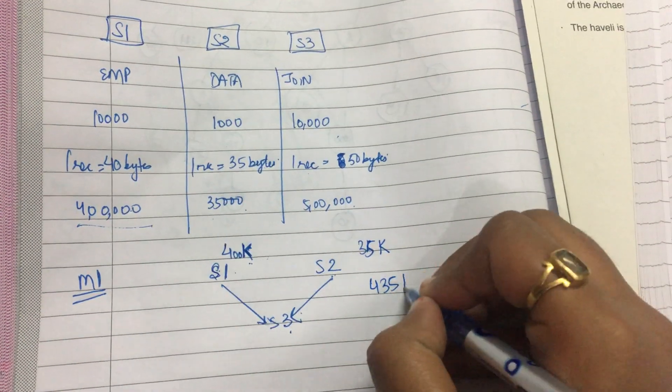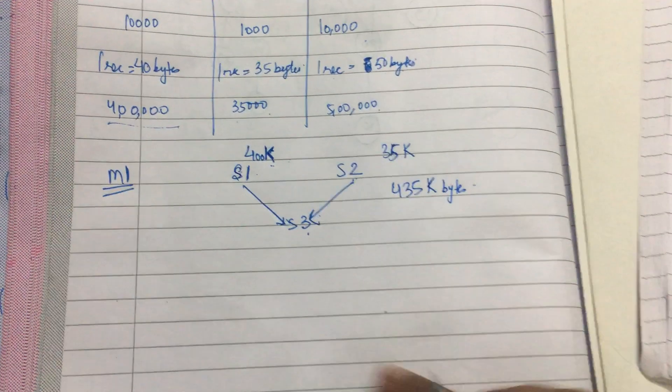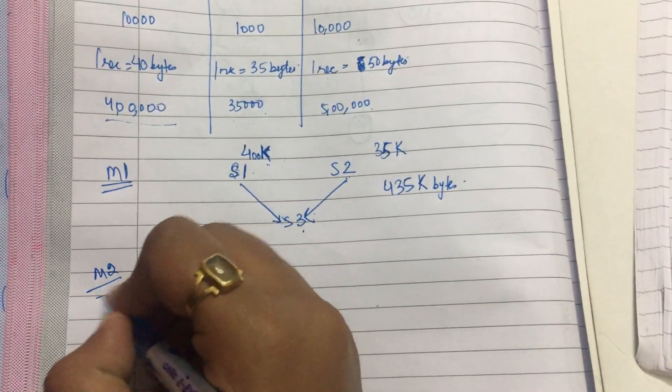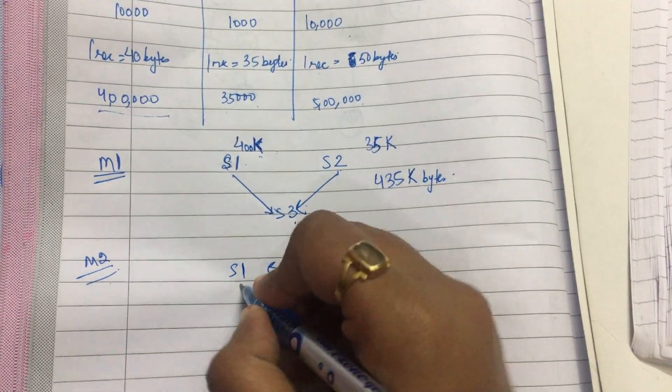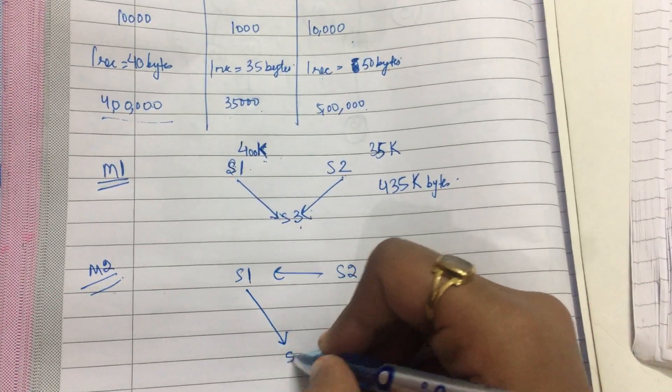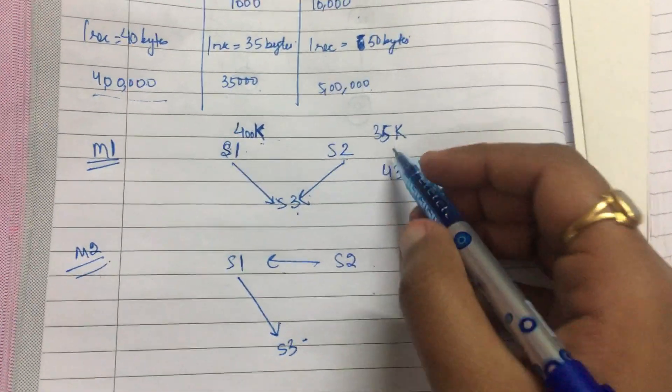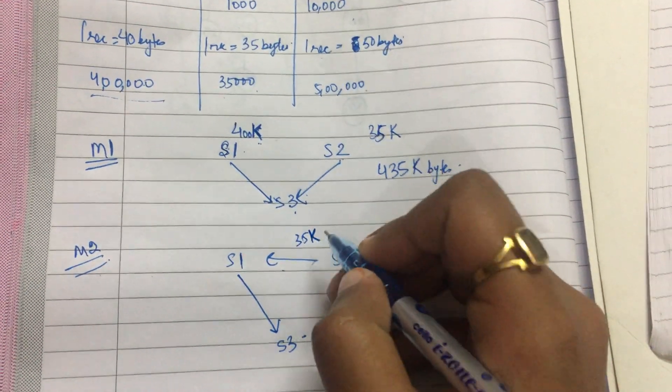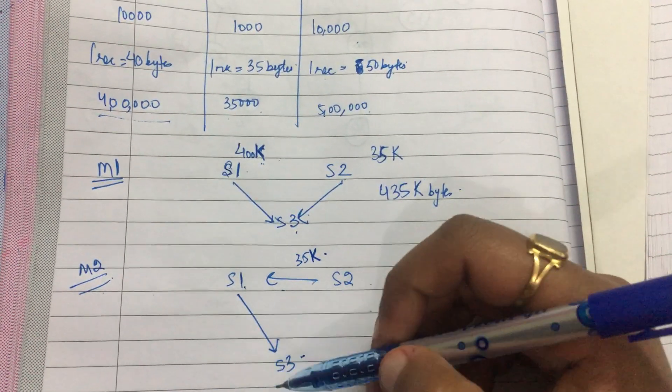sending 435 kilobytes of data. Now the second way is that first I send data from state 2 to state 1, then I send from state 1 to state 3. So when I send data from state 2 to state 1, I will send 35K data. Now when I send data from state 1 to state 3, I will send